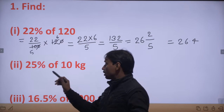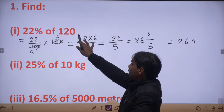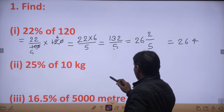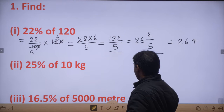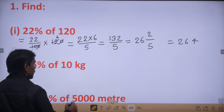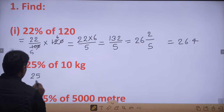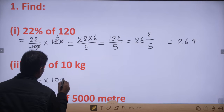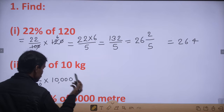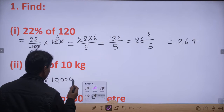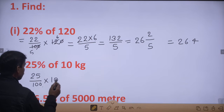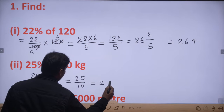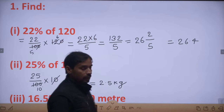Next one: 25% of 10 kg. यहाँ पे unit given है — kg में। Similarly, 25/100 × 10 kg. 10 को simplify करेंगे — 100 में 10 time में होगा। Then 25/10 = 2.5 kg. तो इस तरीके से 25% of 10 kg निकल गया, 2.5 kg.